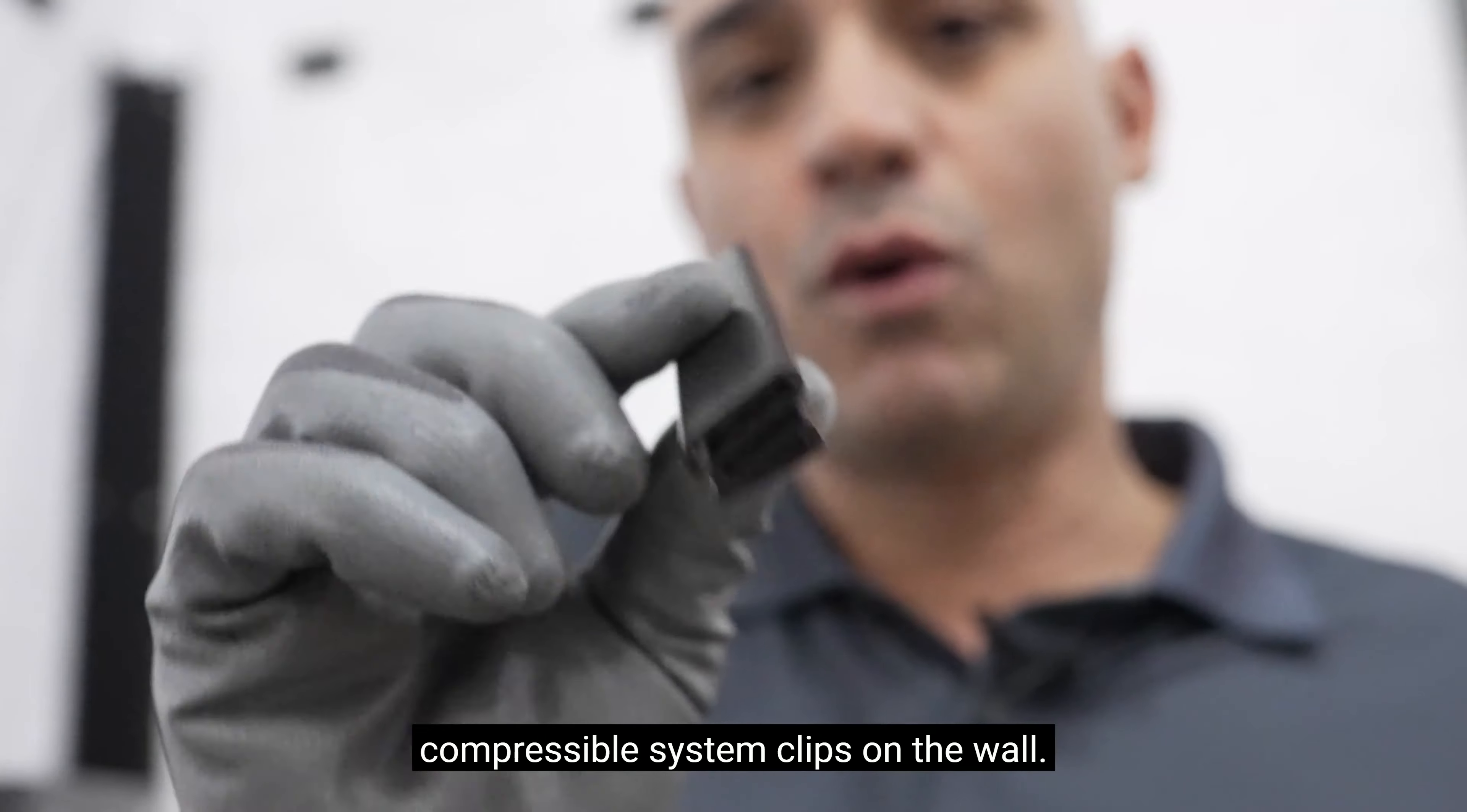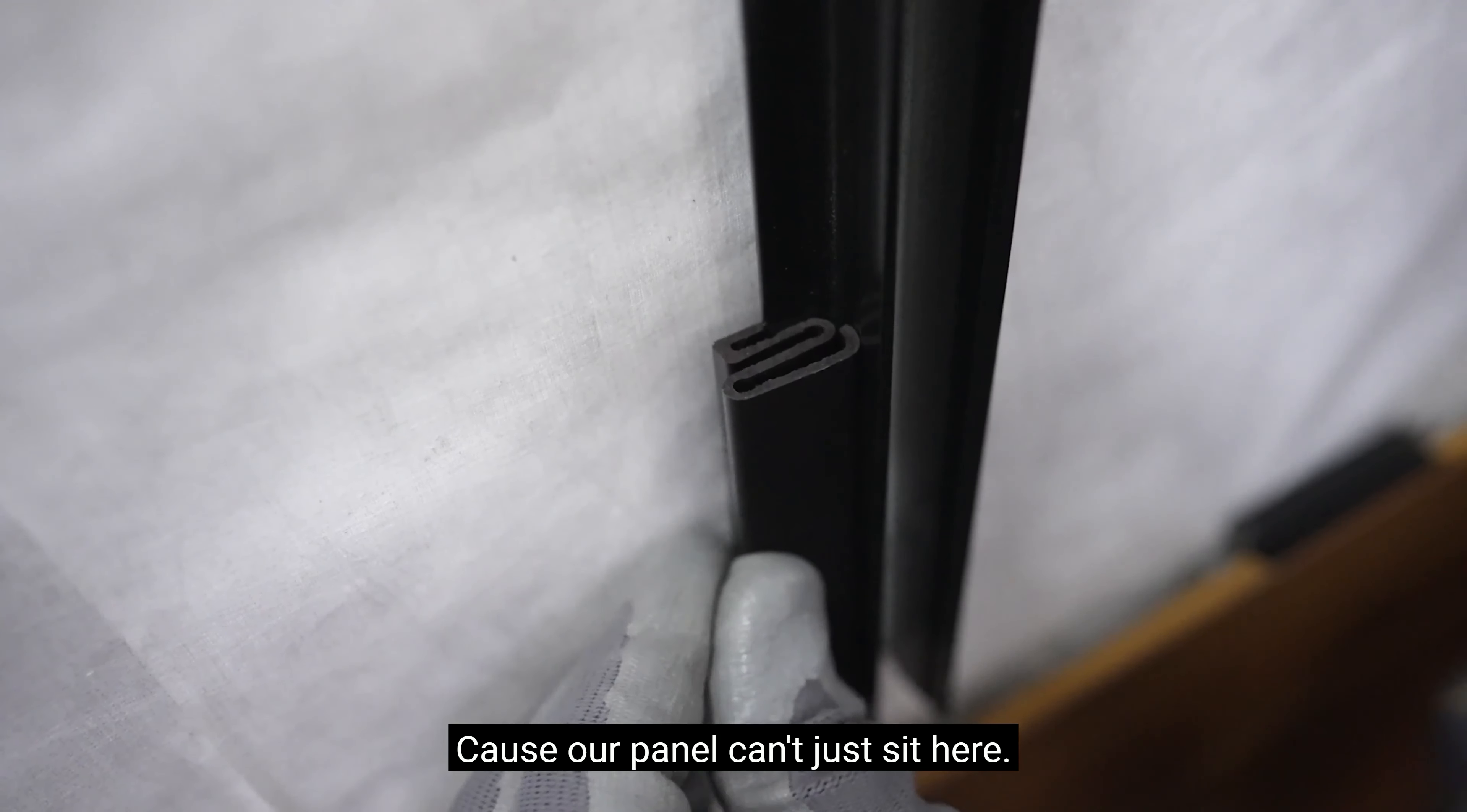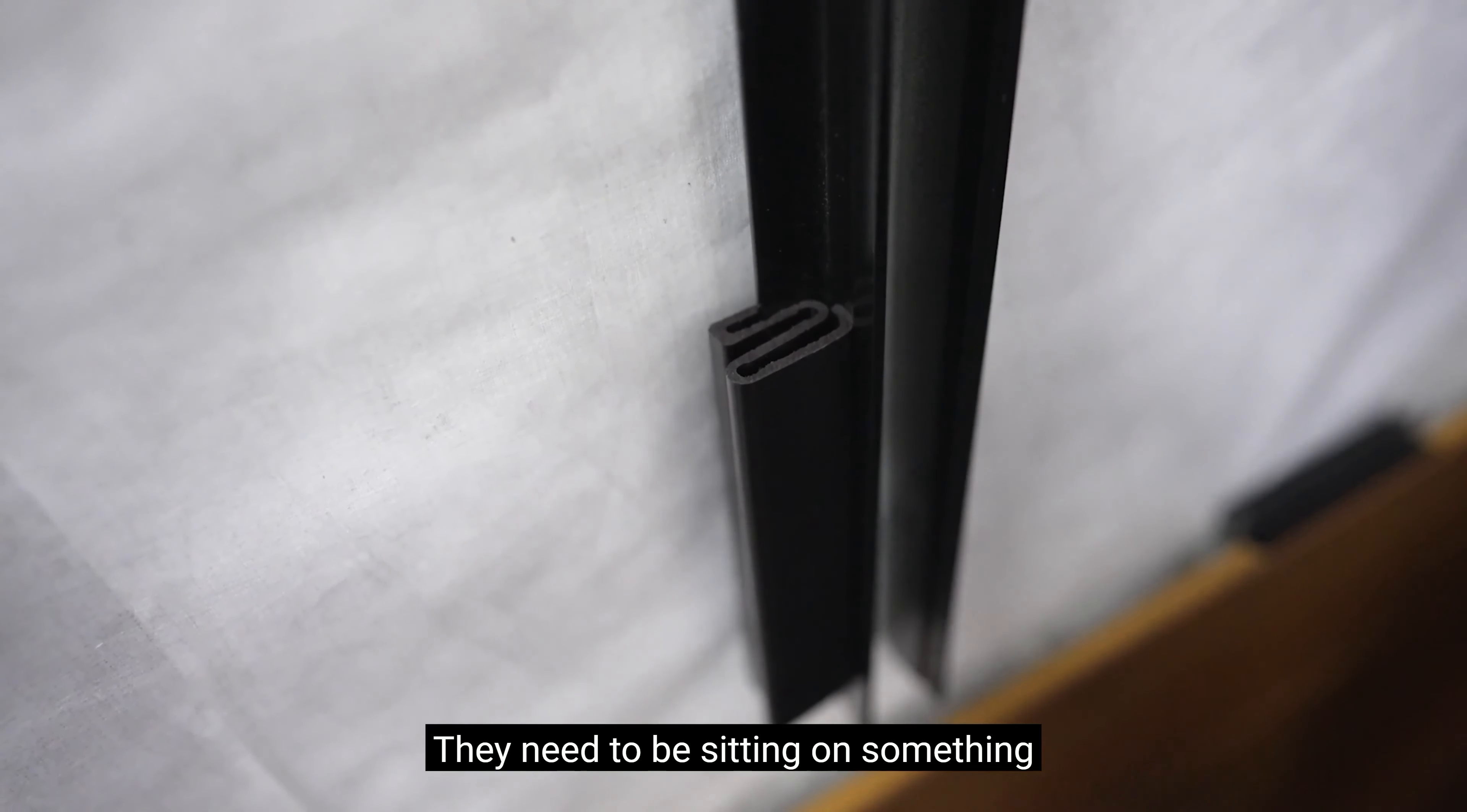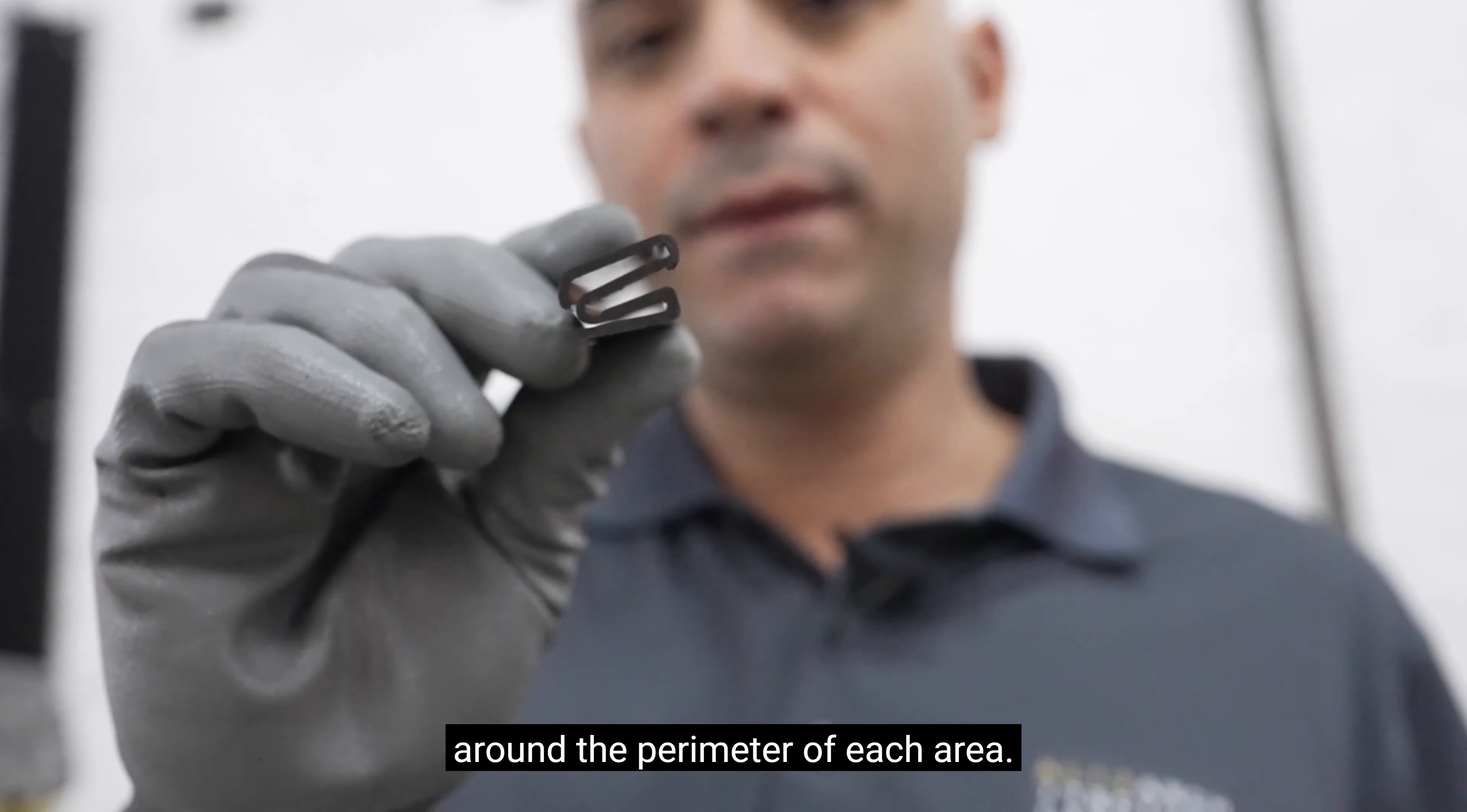I need to put the compressible system clips on the wall because our panel can't just sit here. They need to be sitting on something and they'll be sitting on a series of these around the perimeter of each area.